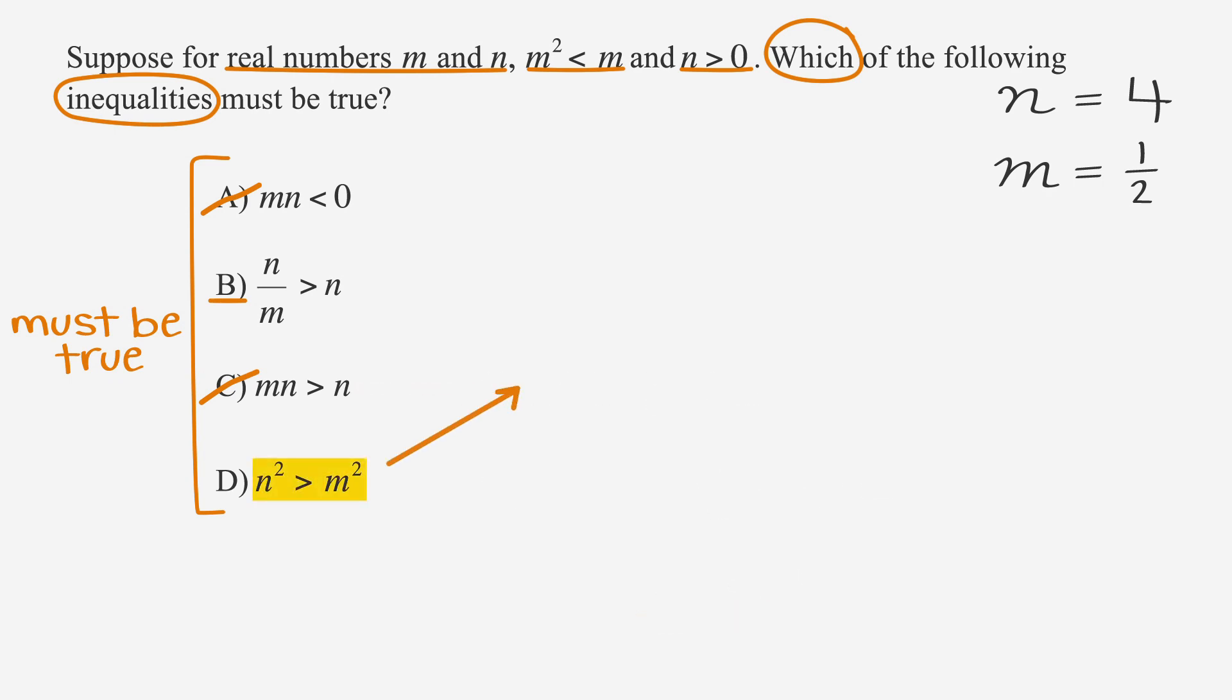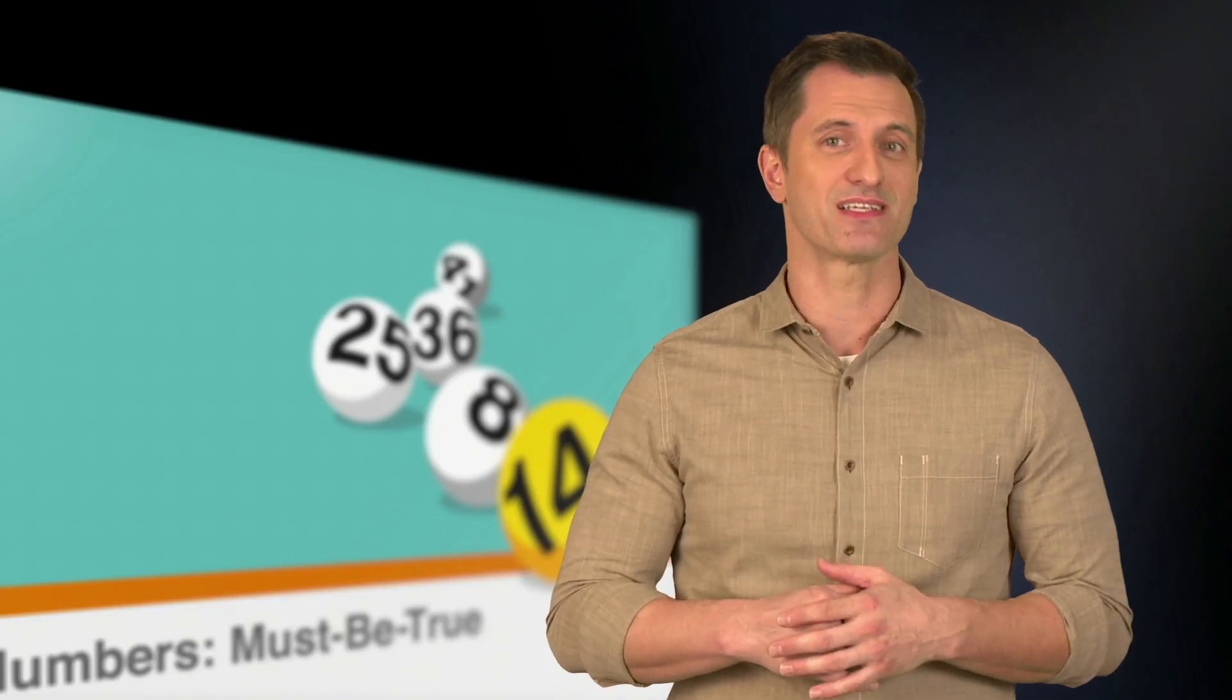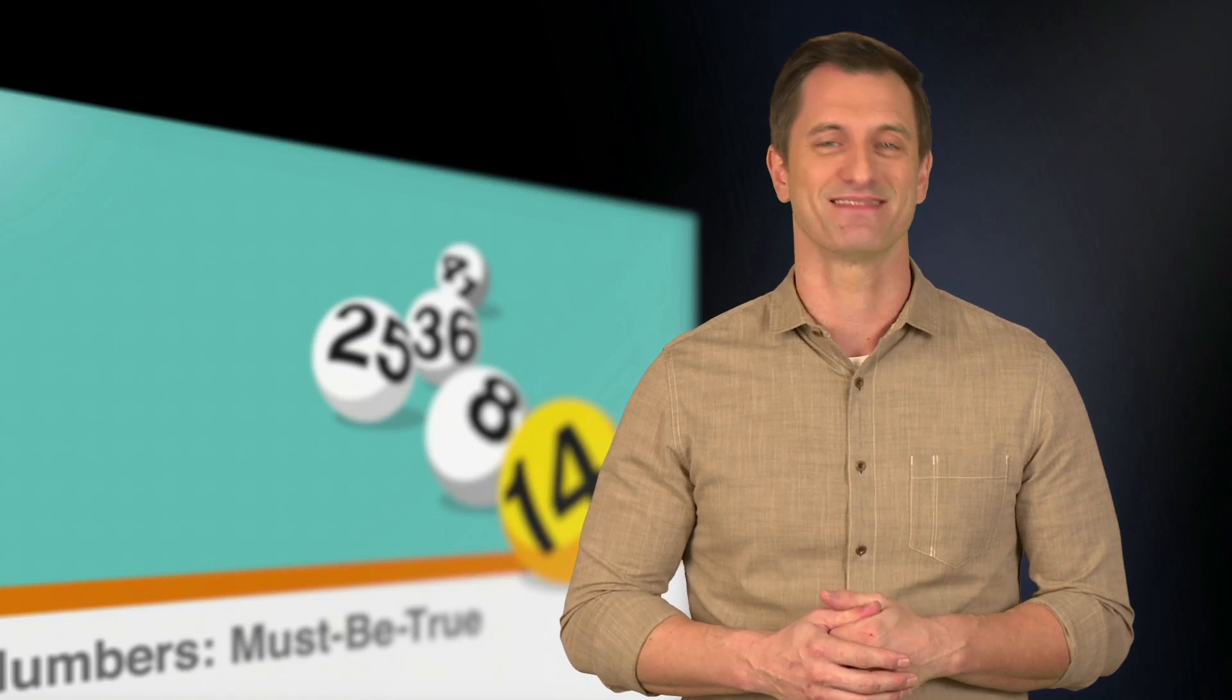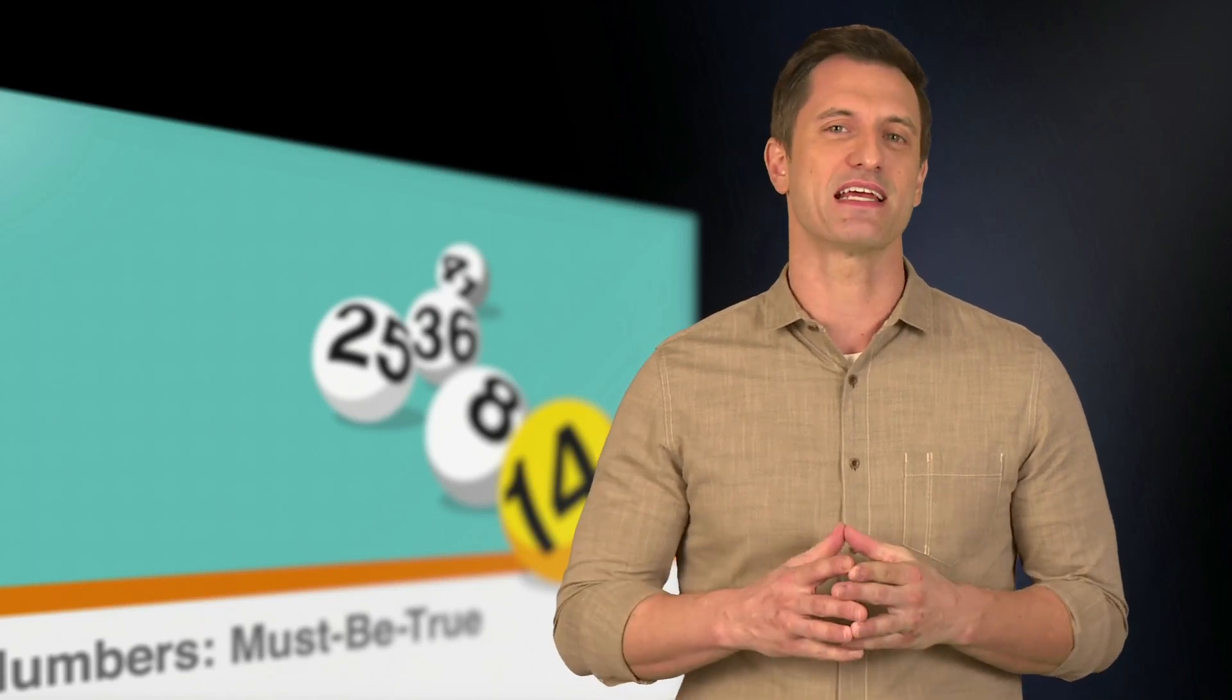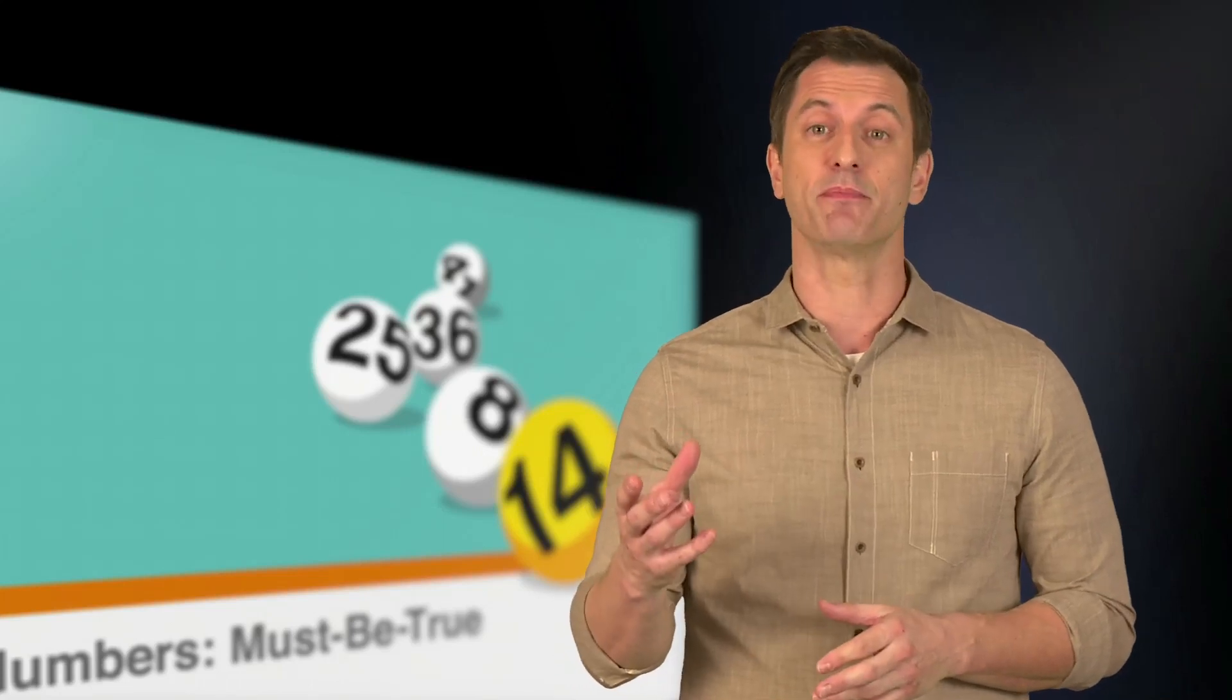With answer choice D, we want to see if n² is greater than m². So we have four squared and one half squared, and 16 is bigger than one fourth. Since we have two possible answer choices, we have to do a second round of testing. Don't worry, we only need to test answer choices B and D, not the entire problem again. And we only need to pick a number for n.